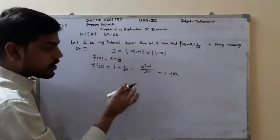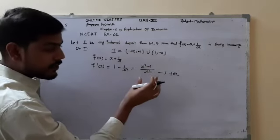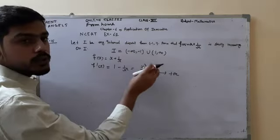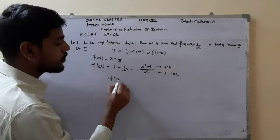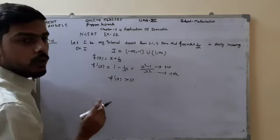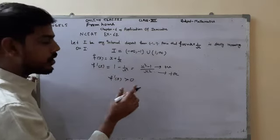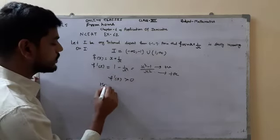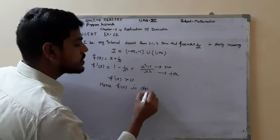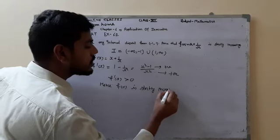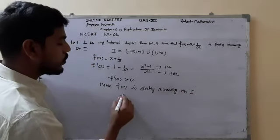For this interval I, if I take any value and square it, the value will always be greater than 1, since I is disjoint from [-1, 1]. So x² - 1 will always be positive. Hence the slope f'(x) = (x² - 1)/x² will always be greater than 0. Since the slope is greater than 0, we use the term strictly increasing.